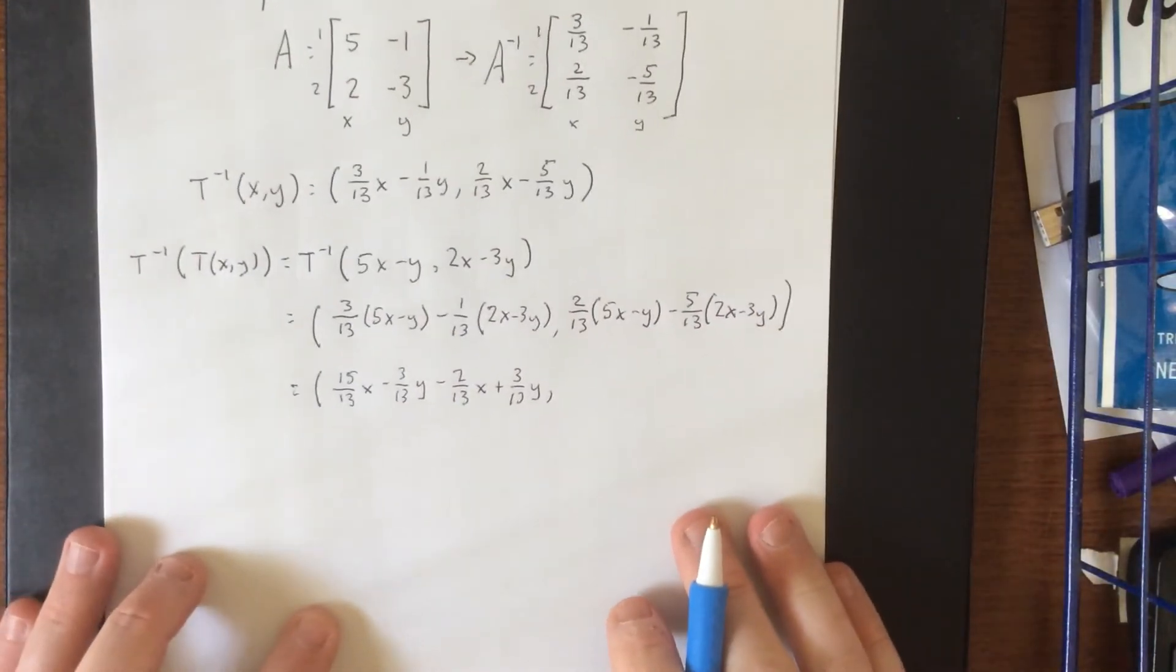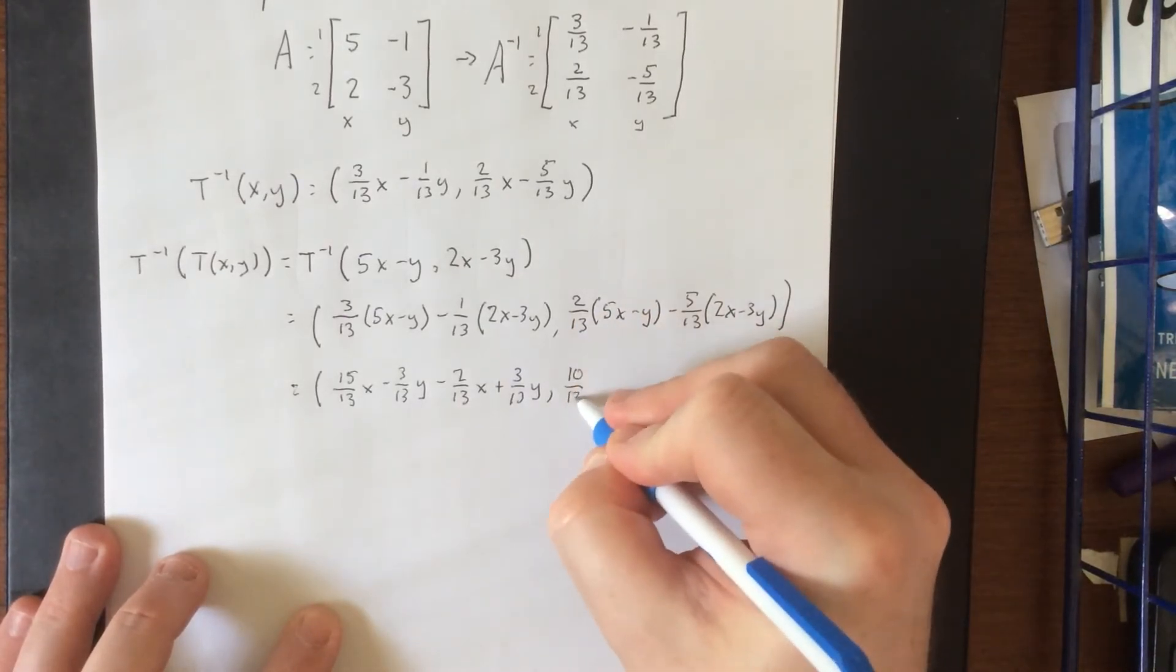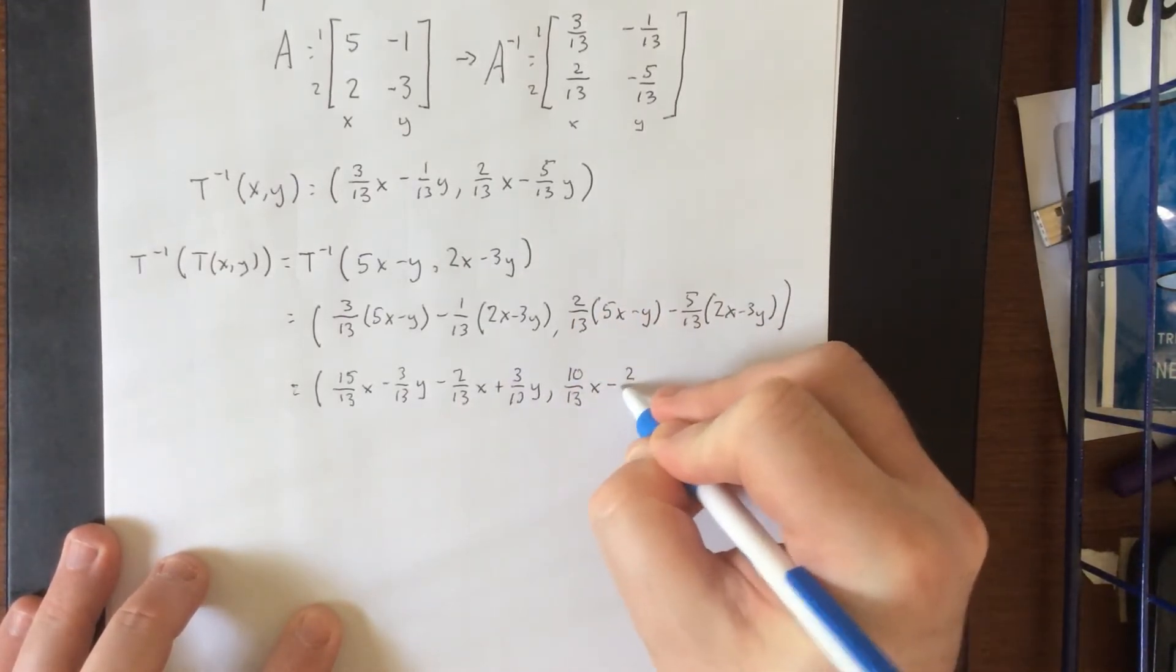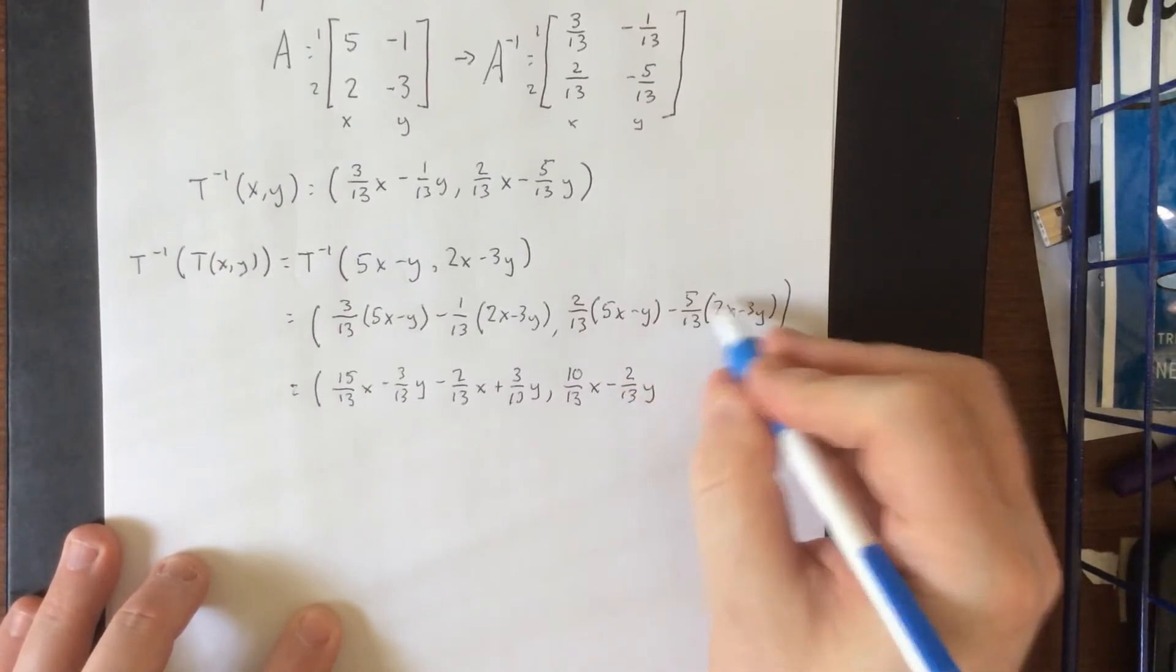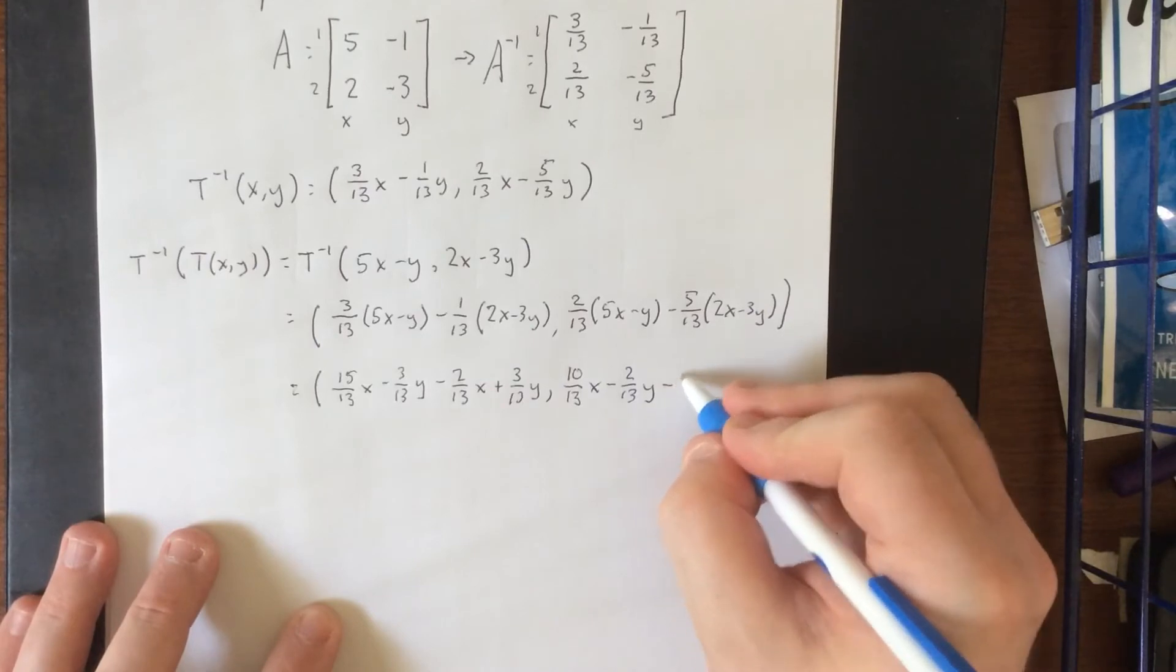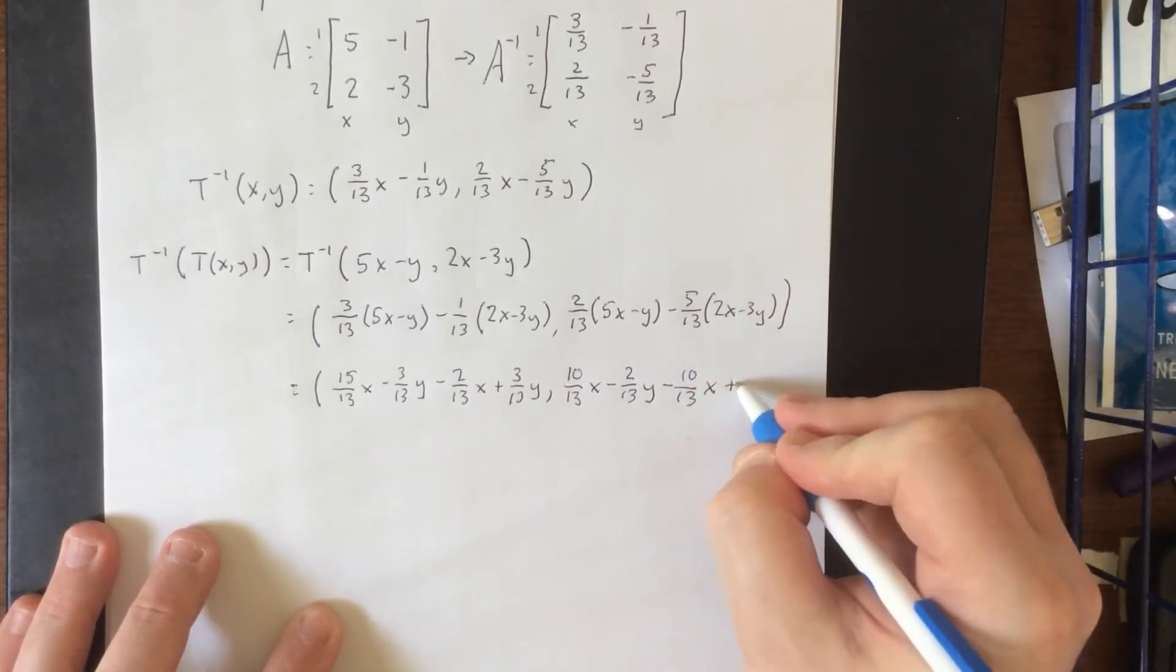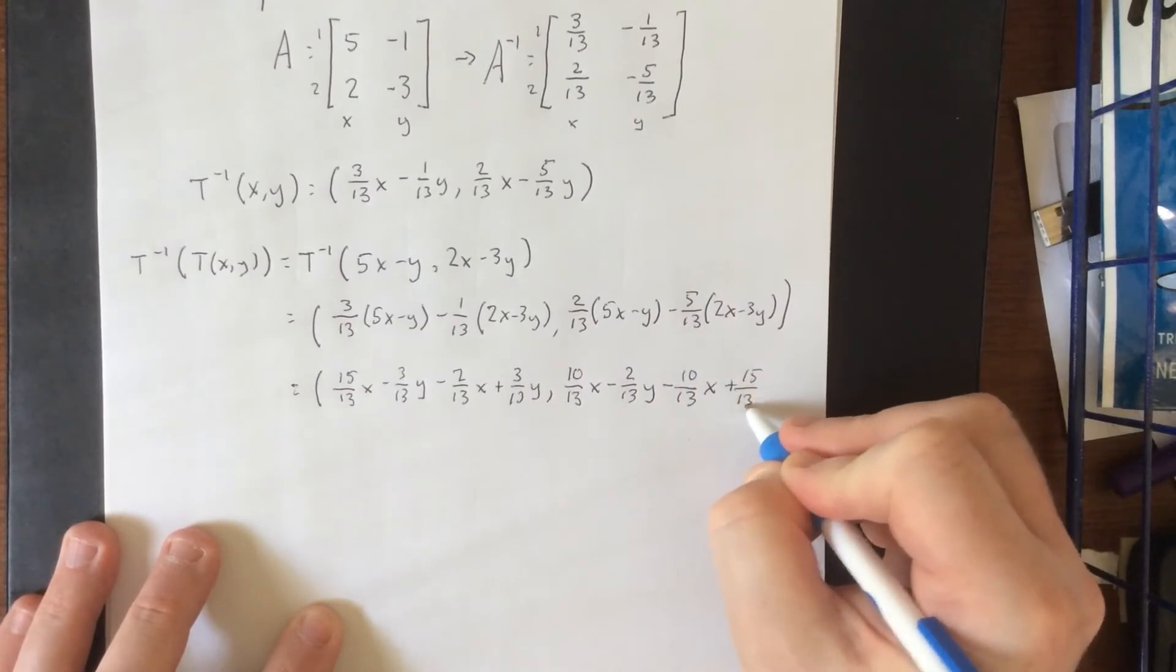Doing the same thing through the second component, we distribute the 2/13, that'll be 10/13 x minus 2/13 y. Distributing the minus 5/13 through, that'll be minus 10/13 x and then plus 15/13 y.